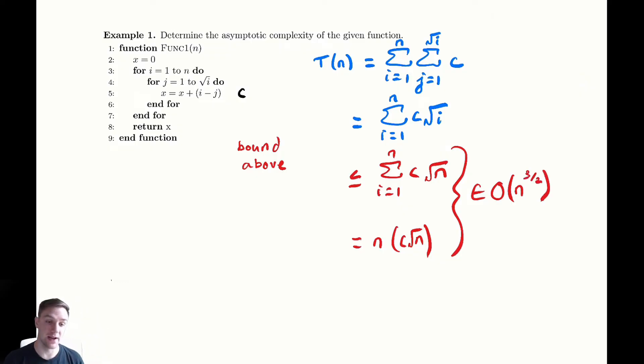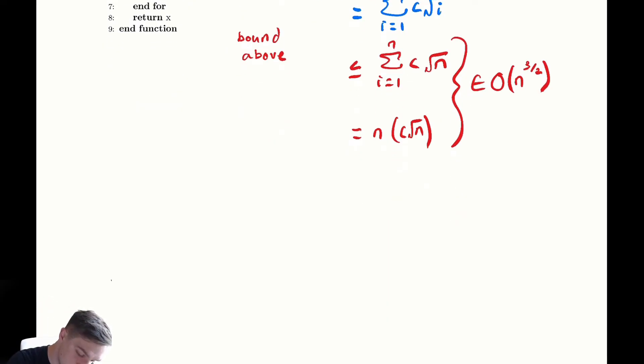Now hopefully we can show we're also in big omega of n to the three halves and then we would be done. So let's do that here in purple.